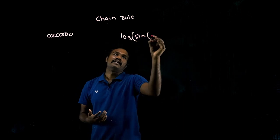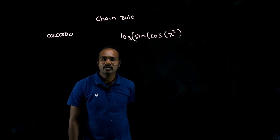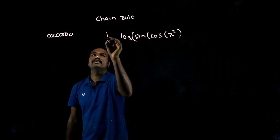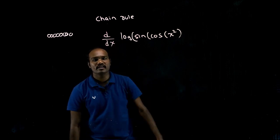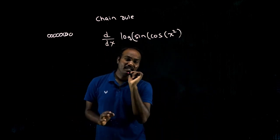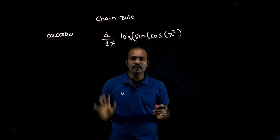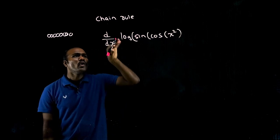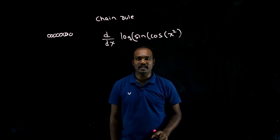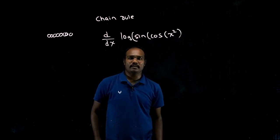So how to differentiate a chained function? Listen very carefully — this is important. Always go from outside to inside. At a time, you have to see only one function. You deal with one function at a time, and then go to the next one. One function at a time.